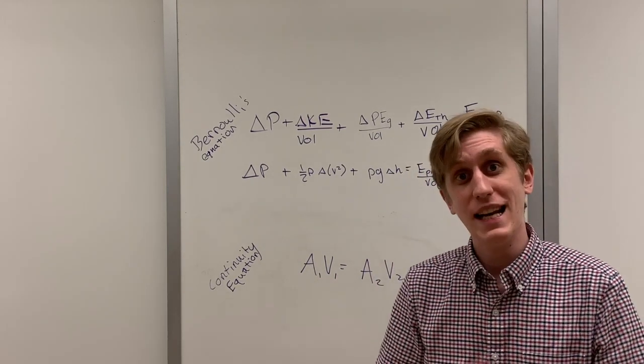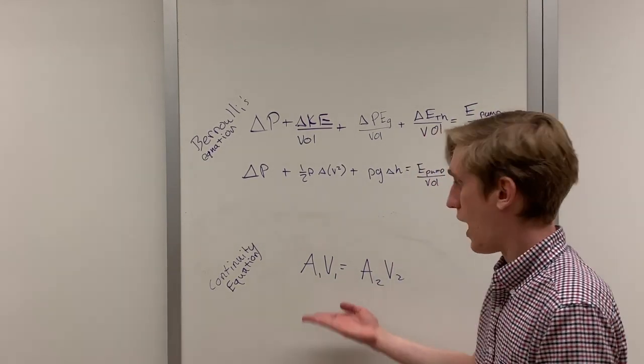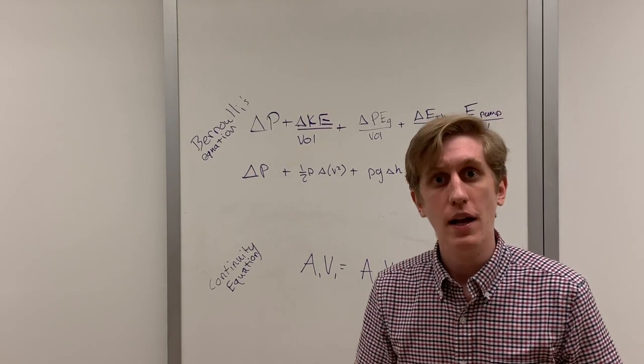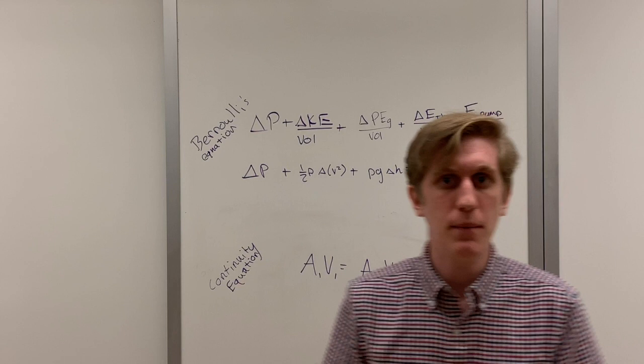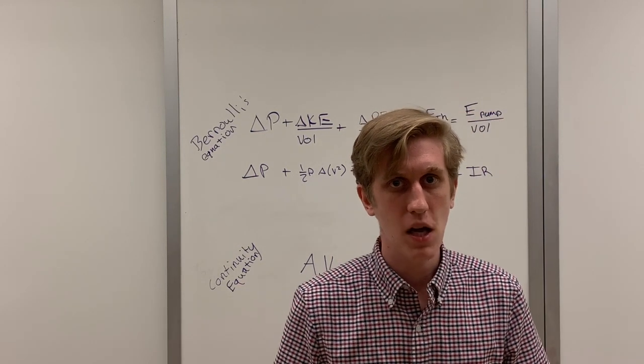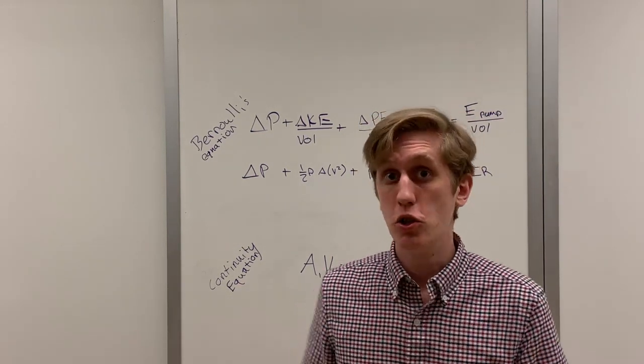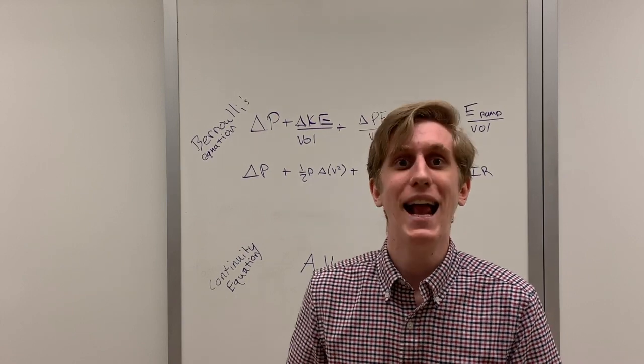It describes how the energy density in a fluid such as water changes or more accurately how it often doesn't. The continuity equation is similar. It describes how the amount of fluid passing through a given point doesn't change in a particular system. Let's take a moment to look at these equations individually and do some examples.